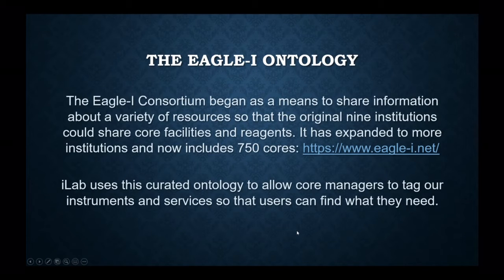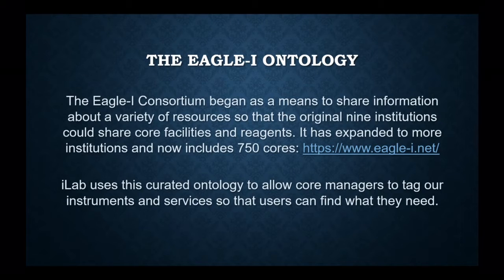As a quick background, the Eagle Eye Consortium began as a way to share information between nine institutions, ranging from Harvard to the University of Hawaii. They wanted particularly to share information about their core facilities, the reagents and things, so they understood exactly what each one had. The consortium has expanded and now includes 750 cores, so there are probably terms for every core we have already in the ontology. iLab uses this structured ontology to allow us to tag our instruments so that people can find what they need.